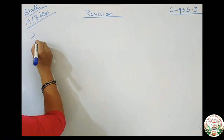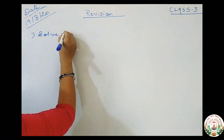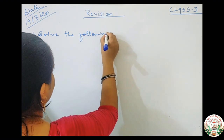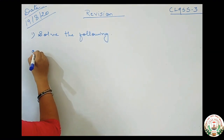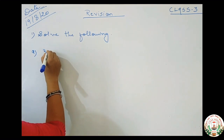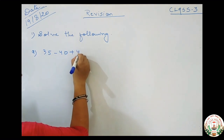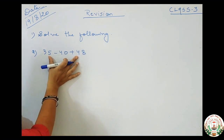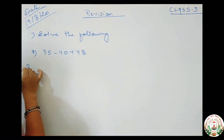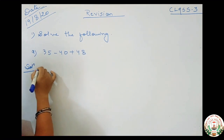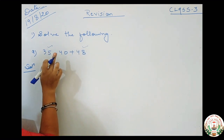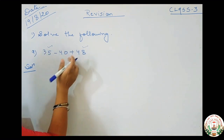Question number 1 is solve. Solve the following. Number A is 35 minus 40 plus 48. During this chapter I explained the BODMAS rule. In that rule, first we will do the addition part and then we will subtract. So we will do addition first. Which two numbers are going to be added? 35 and 48. Here minus 40 has a minus sign, so we will subtract that later.